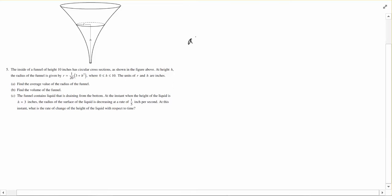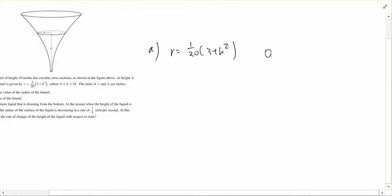Part A is asking for the average value of the radius of the funnel. The average radius can be simply obtained by looking at this equation over here, which is r equals 1 over 20 times 3 plus h squared. We are given the interval of the height which is 0 to 10.